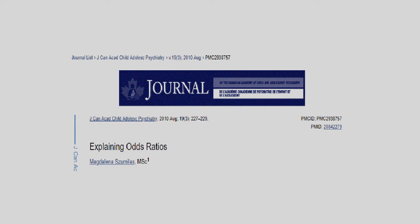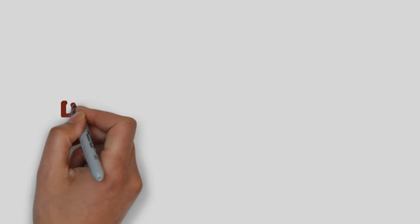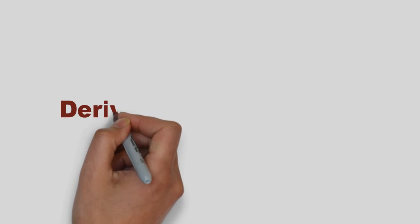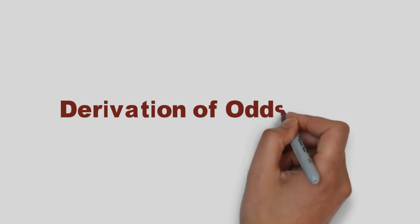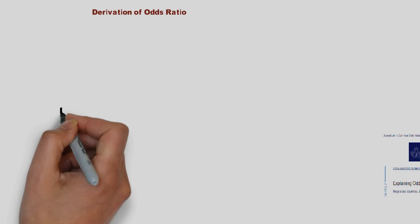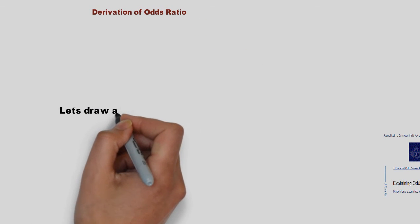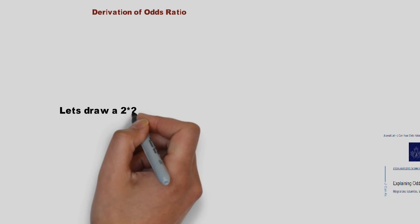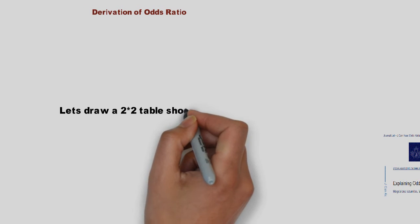Hello, this is Raj. Many of us know about explaining odds ratios, but this video is not about that. This is about the derivation of the odds ratio formula. So let's draw a 2 by 2 table, which is popularly used to solve the relationship between exposure and outcome.